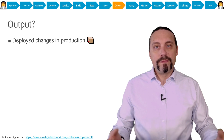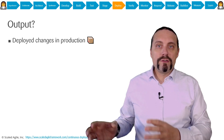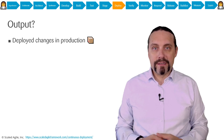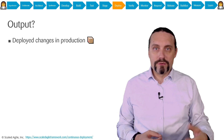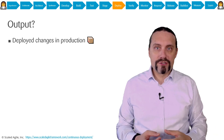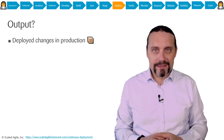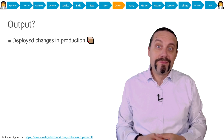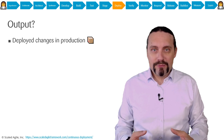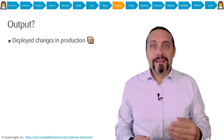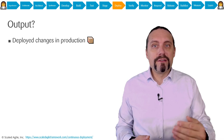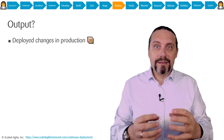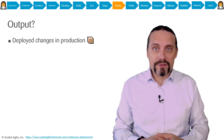We have now talked about all the practices we can use to continuously deploy to production. The output of continuously deploying to production is simply that our changes are deployed into the production environment and are ready to be used.